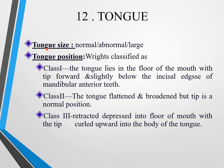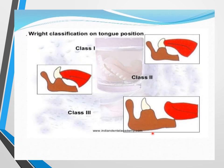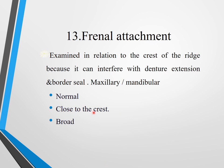Tongue size can be normal or large. Wright's classification for tongue position: Class I — tongue lies in floor of mouth with tip forward and slightly below incisal edge; Class II — tongue flattened and broadened with tip in normal position; Class III — tongue retracted and depressed into floor of mouth with tip curled upward. Classes I and II are normal. Frenal attachment can be normal, close to the crest, or broad.